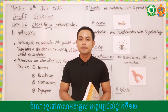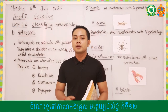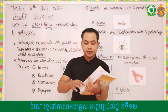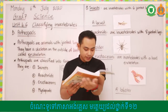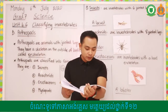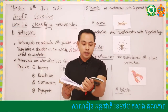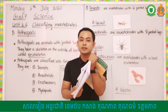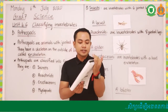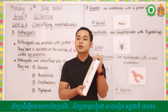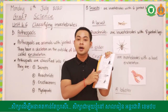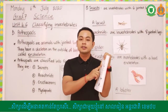Do you remember what the three groups are? They are Mollusks, Annelids, and Arthropods, as you can see in your lesson on page 64. So right now you can open your book to page 64 once again to see your lesson one more time. Invertebrates are classified into three classes: Mollusks, Annelids, and Arthropods.